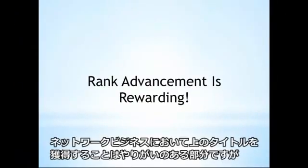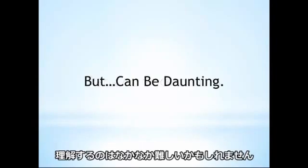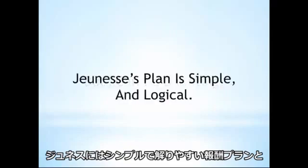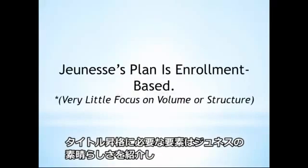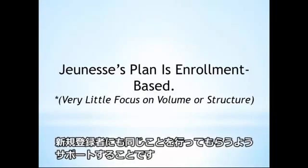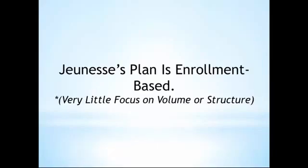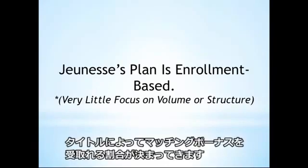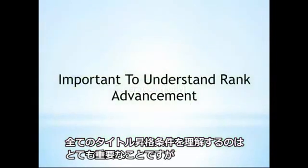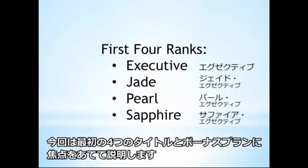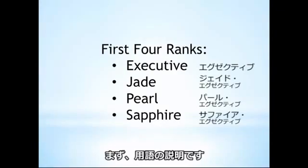Advancing through the ranks in a networking opportunity is one of the most rewarding parts of the experience, but unless understood, it can also be one of the most daunting. Jeunesse features a simple-to-understand compensation plan with logical rank advancement milestones and clear-cut objectives. The ranks are earned by successfully referring people to the Jeunesse opportunity and helping those people do the same. In this video, we're only going to focus on the first four ranks and the benefits associated with them.